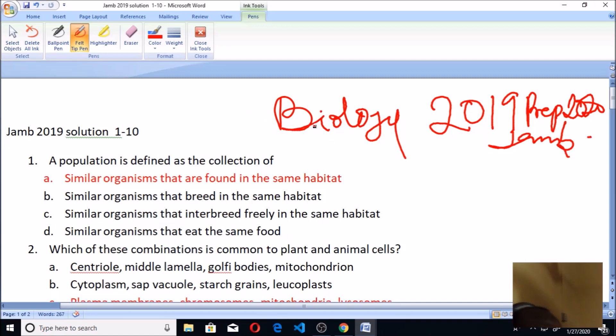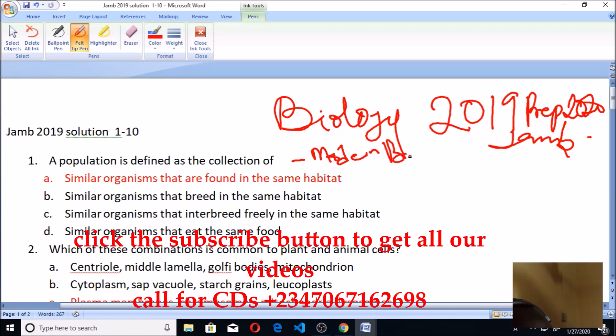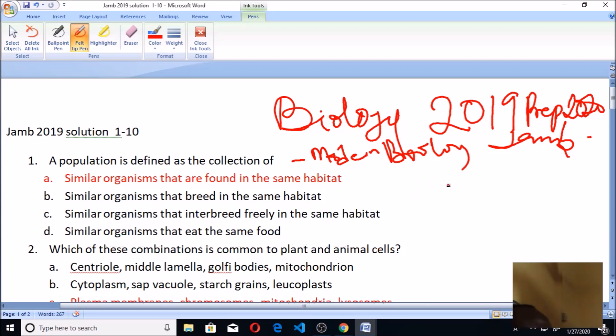I'm going to be looking at the first question: a population is defined as a collection of what? Now if you check through the modern biology textbook, population is actually similar organisms. If you talk about population of human beings, you know human beings are mammals, they are similar kind of animals staying together in a geographical area like Nigeria. So if you pick all the human beings in Nigeria, the eastern part, western part, northern part, similar human beings, you call it population.